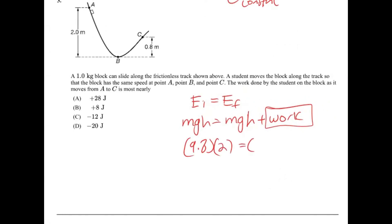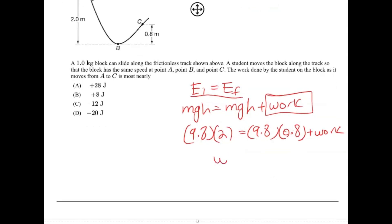So from what I can tell, the mass is going to be constant, so mass is just going to be one. The gravitational constant is 9.8, and so we can just multiply that by the height 2, equals the mass is constant, gravitational constant, and then the height of 0.8, plus work. So these two have to balance out because the speed is the same, and so we end up getting work is equivalent to 12 joules.